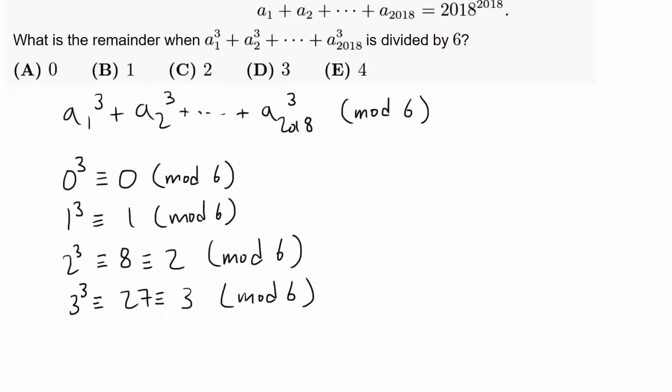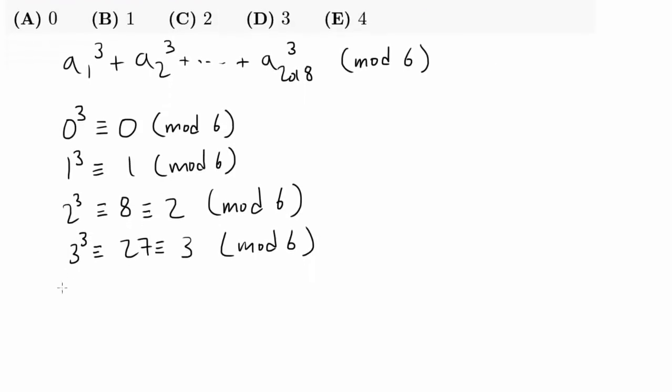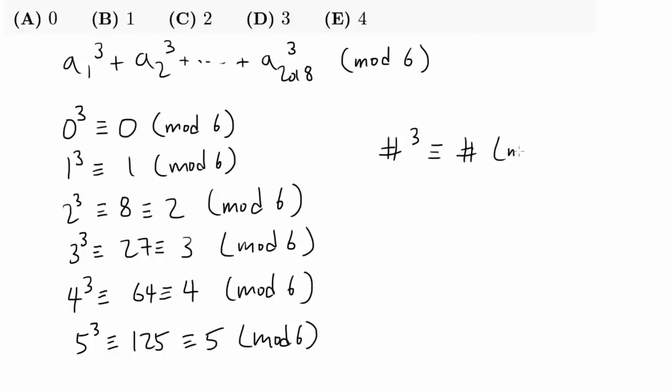Let's go all the way down to 5 and see if this pattern is going to persist. 4 cubed is 64, which is congruent to 4 mod 6, and 5 cubed is 125, which is congruent to 5 mod 6. So we are done, because this is telling us that any number cubed is congruent to that number in mod 6.